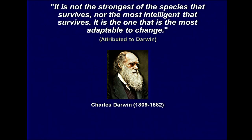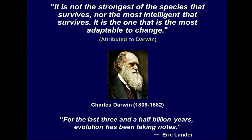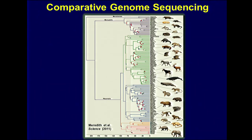The next major phase of interpreting the human genome sequence really required a fundamental understanding of the properties of evolution that Darwin had taught us. He pointed out that it's not the strongest of the species that survives, nor the most intelligent, but the one most adaptable to change. Fundamentally, over millions of years of evolutionary time, genomes have been tinkered with through evolutionary forces. Some things don't change at all — and if they don't change, it's probably because they confer important biological properties that cannot be messed with, giving us clues about what can and cannot be tolerated.